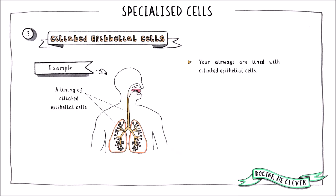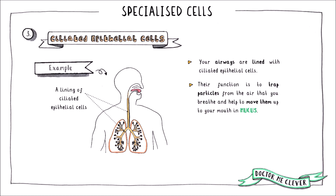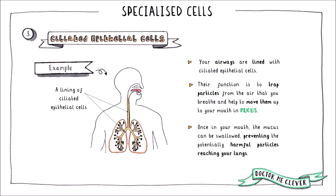Ciliated epithelial cells are found in several places throughout the body. They line the airways, trapping particles of dust and germs in the mucus which sits on top of these cells. Ciliated epithelial cells move this mucus away from the lungs, up to the mouth where it can be swallowed or spat out. This is the body's way of preventing harmful particles reaching the lungs and causing infection and disease. These cells also line the inside of the fallopian tubes, where they help to move the egg down towards the uterus.